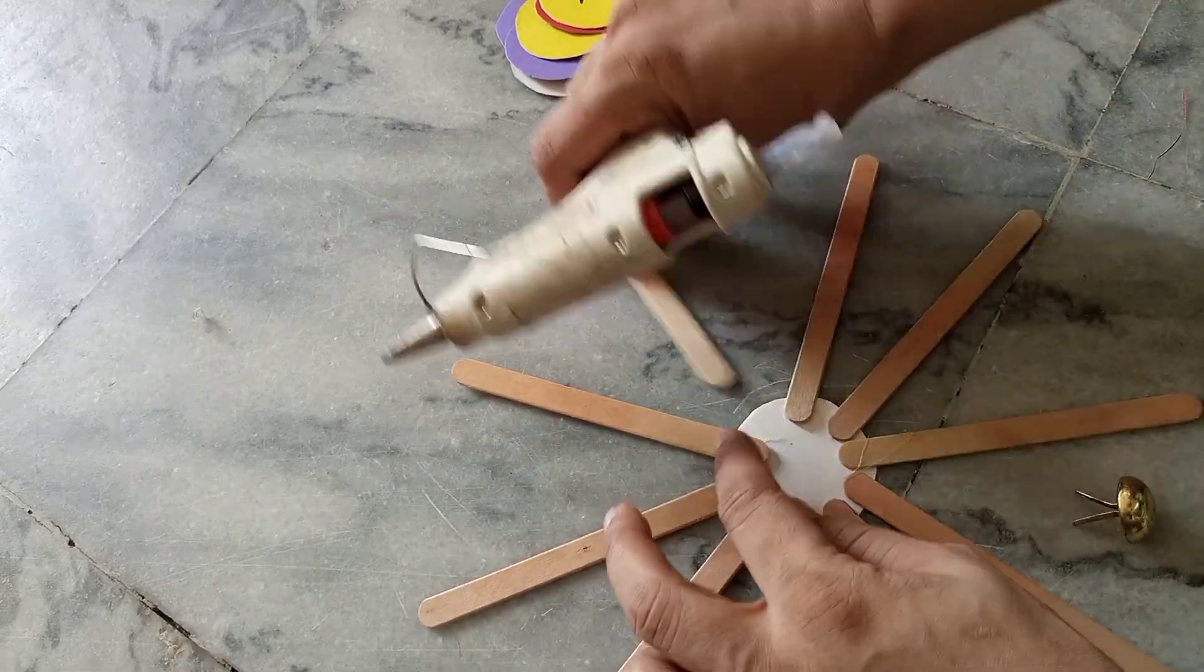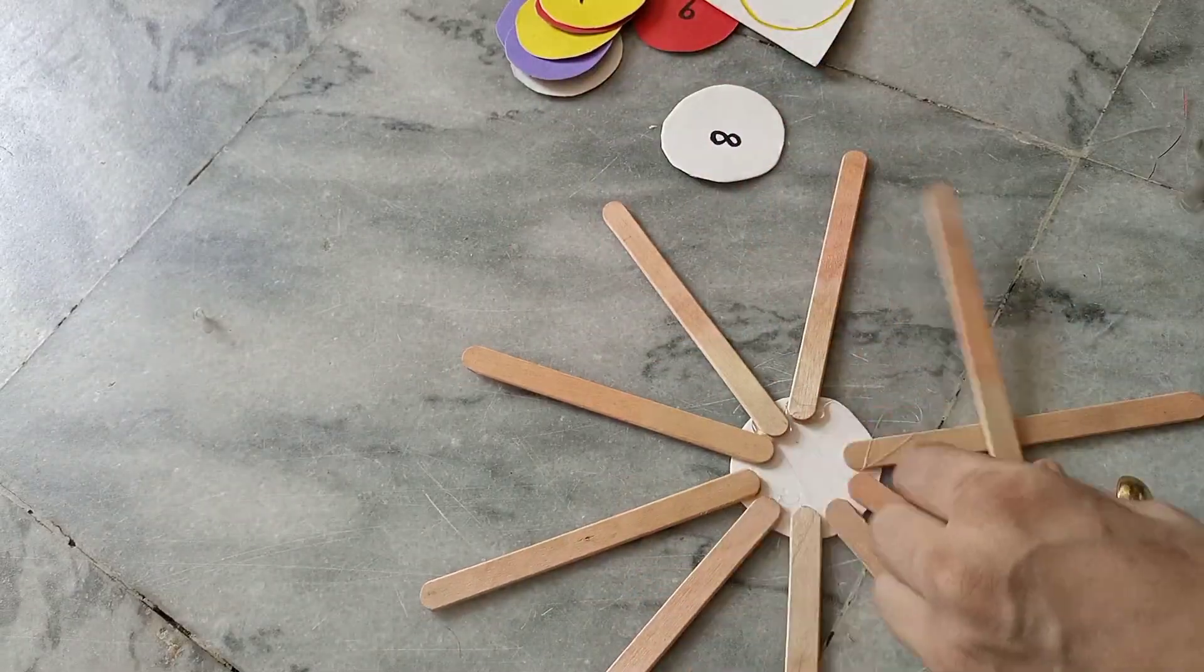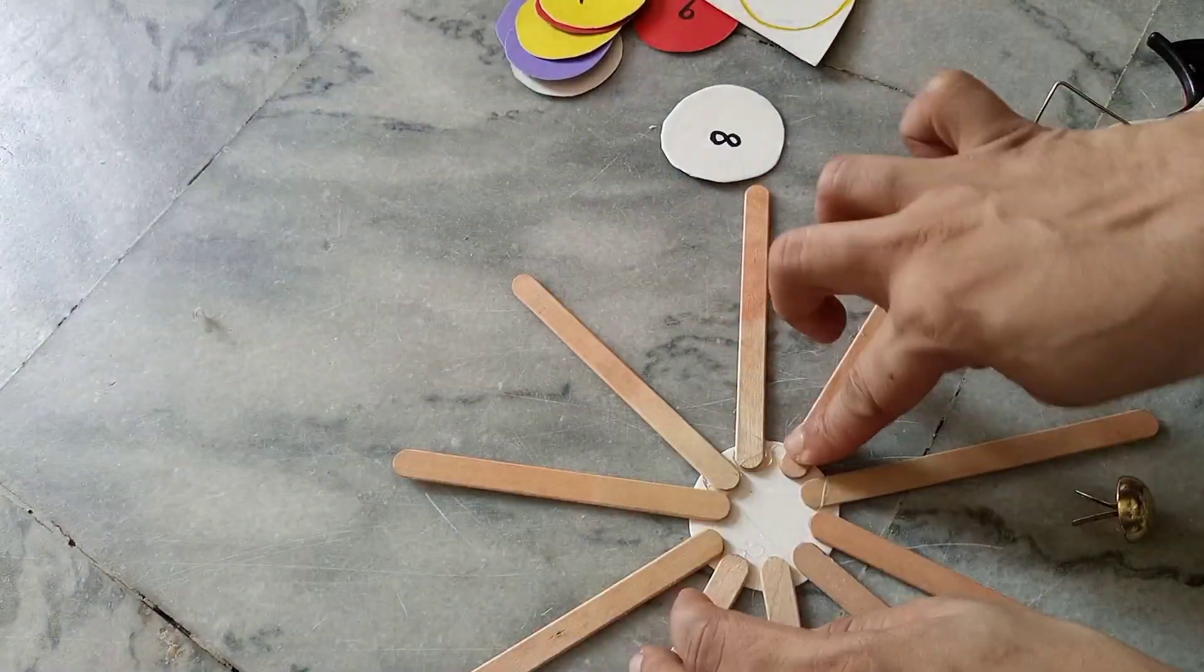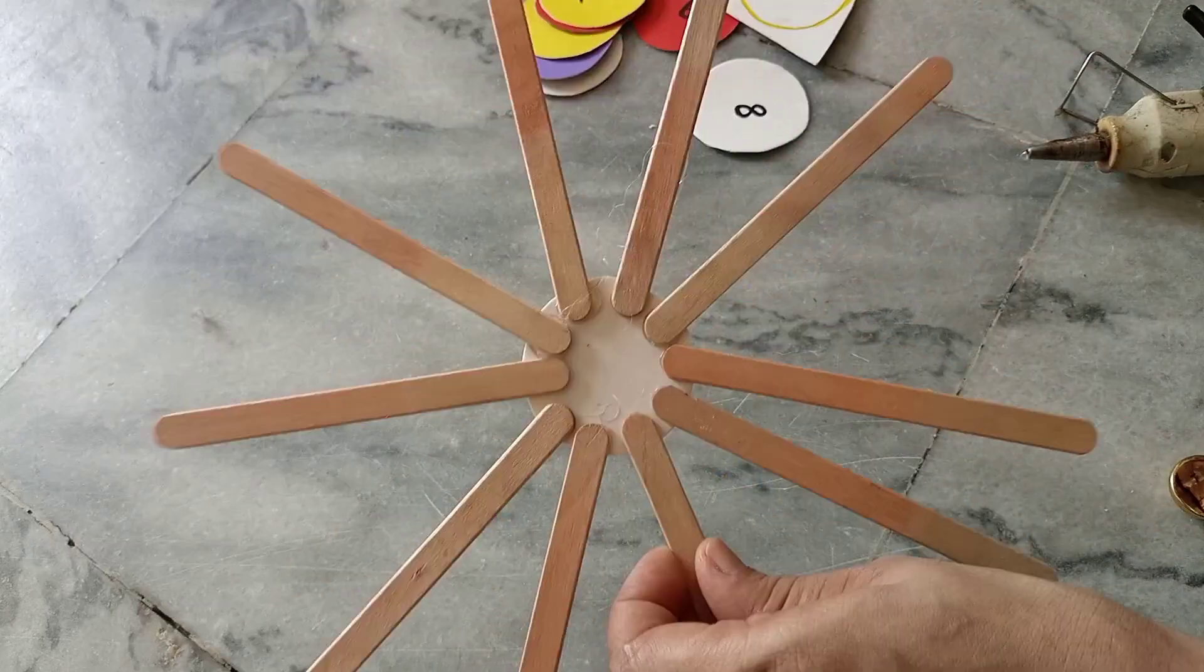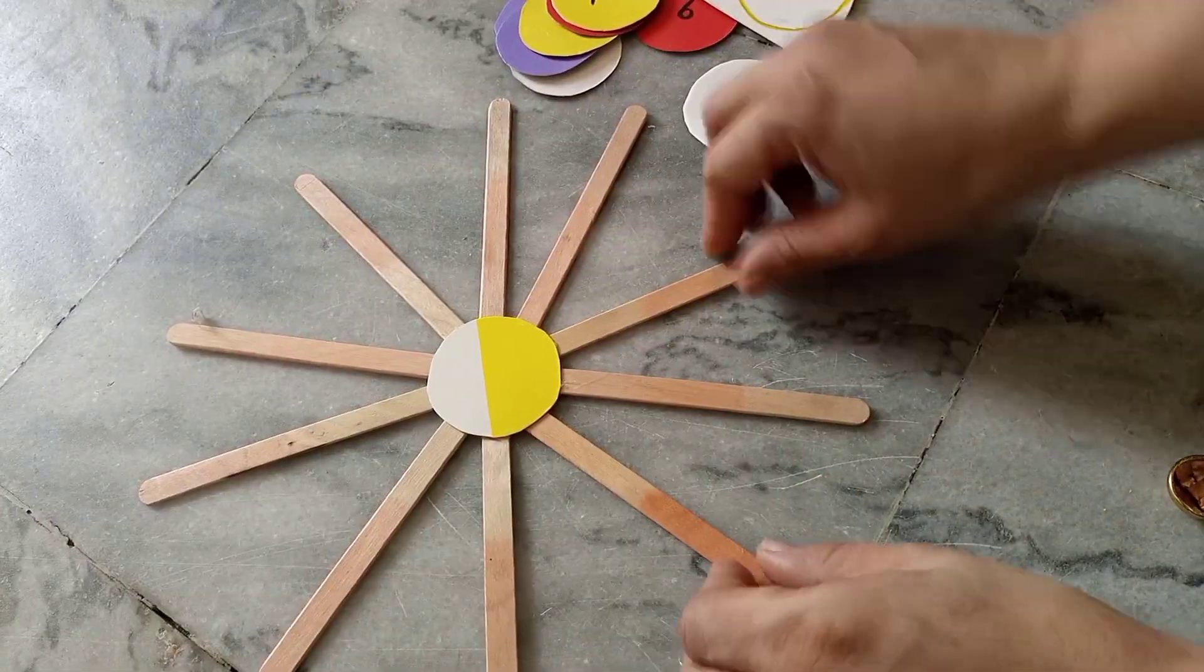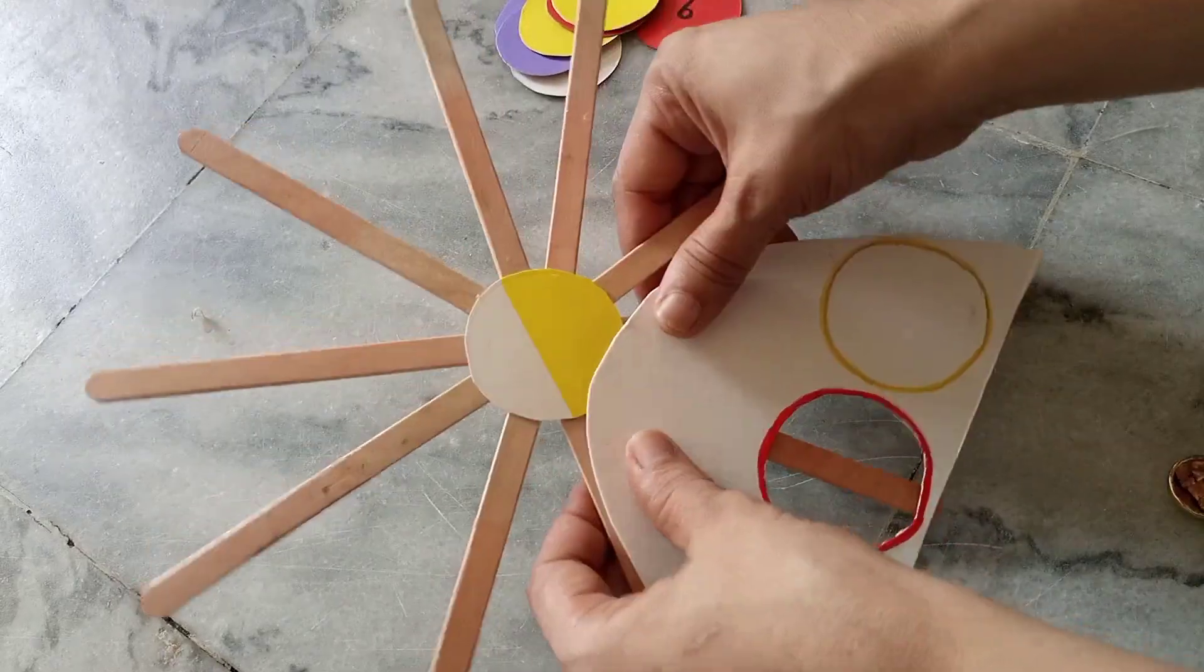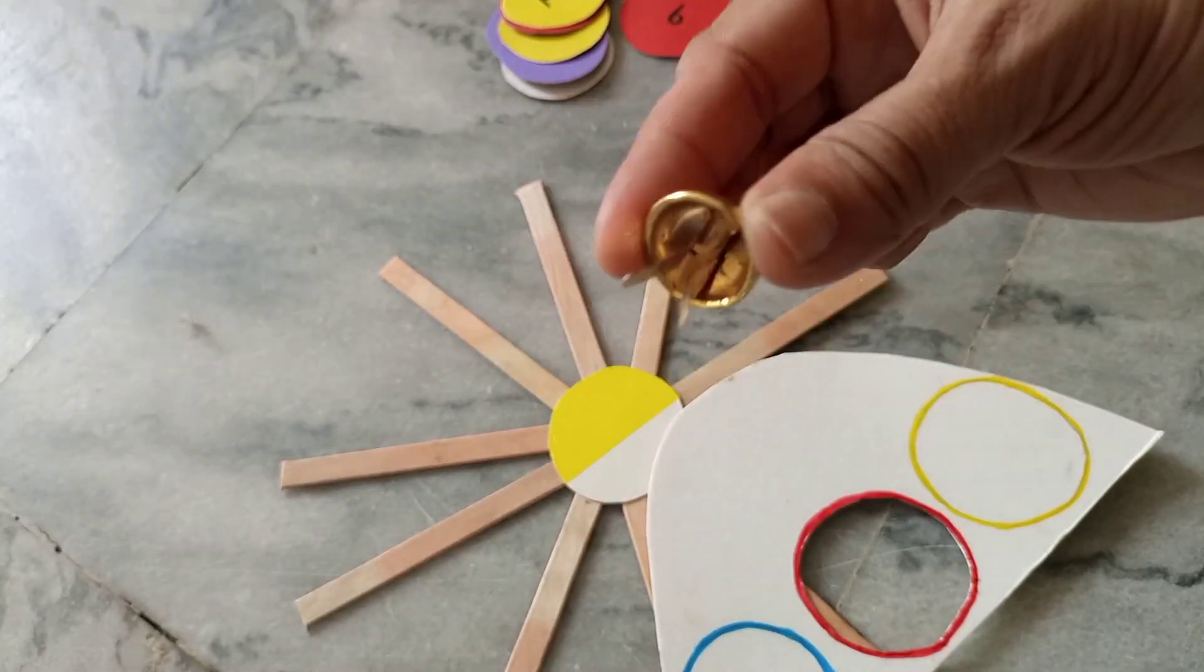These ice cream sticks are a little bit longer, so you have to cut them according to your craft size. I will show you how I will resize it and make it smaller. First you attach all the ice cream sticks on this circle cardboard.